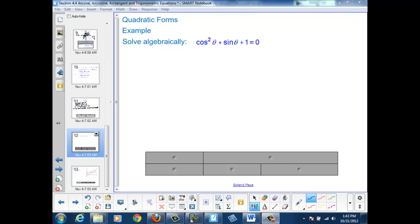The way we're going to do that is to apply a Pythagorean identity. I'm going to replace the cosine squared theta with 1 minus sine squared theta, and then complete the equation, plus sine theta plus 1 equals 0.